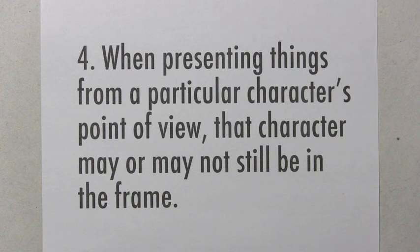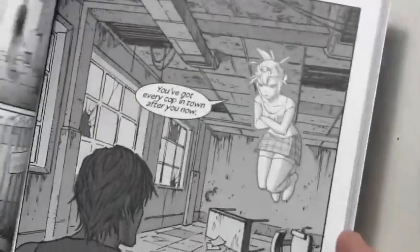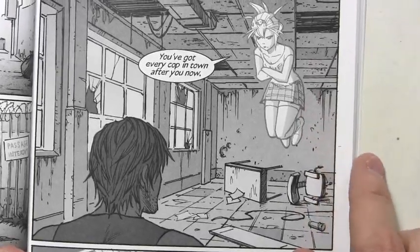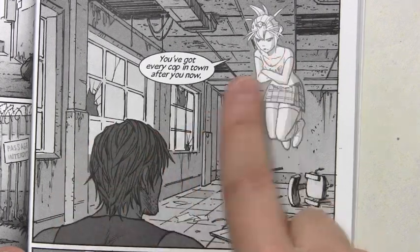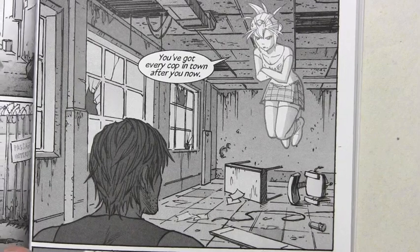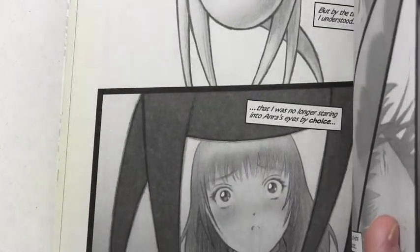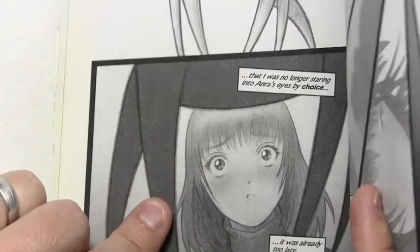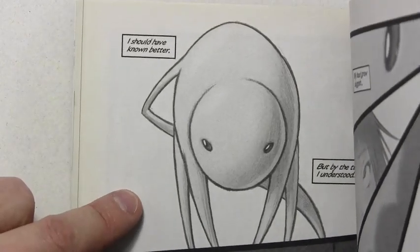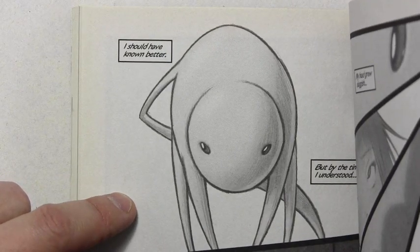Number four: when presenting things from a particular character's point of view, that character may or may not still be in the frame. From Brody's Ghost, we've got Brody looking at the ghost Talia. Technically the camera is behind Brody's shoulder — we're not seeing exactly what Brody is seeing, but this is primarily presented from his point of view. Including him in the shot gives a sense of the spatial relationship between the two characters. You may choose that approach, or go for the actual real point-of-view shot in which we see what the character sees — as in this example from Miki Falls, where we are seeing what Miki is seeing. Periodically you may decide that that is the most effective use of the panel.